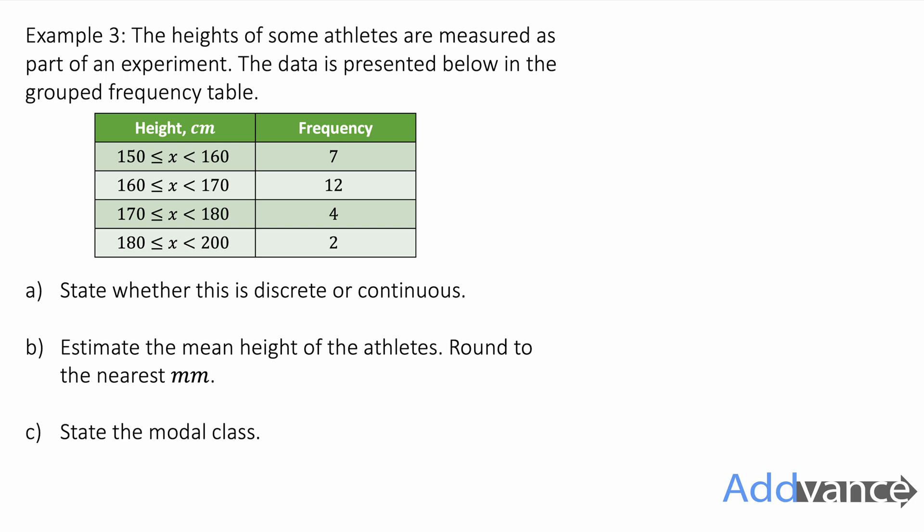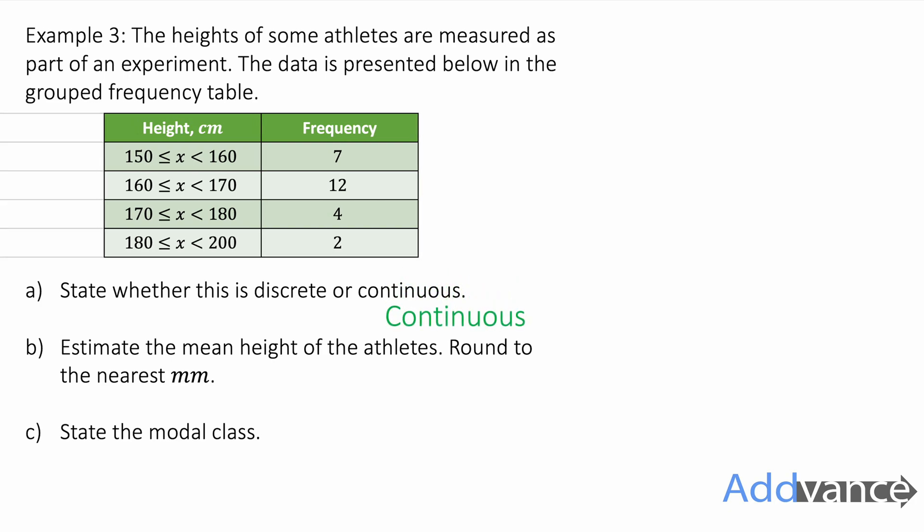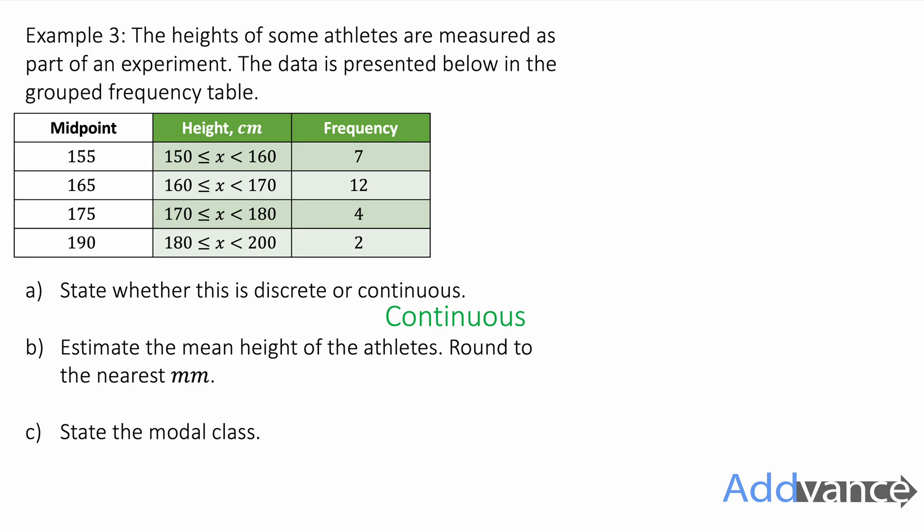We're going to have to state whether this is discrete or continuous, estimate the mean, and state the modal class. Okay, the first thing we need to do here is we need to find the midpoints of all the groups. And so we add a new column to the grouped frequency table. And that is midpoint: 155, 165, 175, and 190. Where the midpoint of the last group you have to be careful of, because it's a bigger group, from 180 to 200. Now, is this discrete or continuous? It is continuous, because the height of an athlete can be any number in the range. It is not constrained to specific values. So the height can be any value, therefore it's continuous.